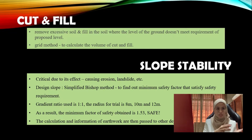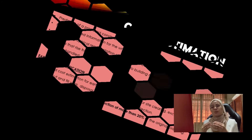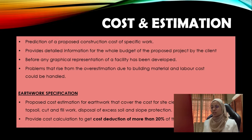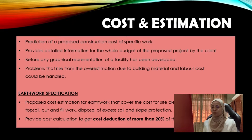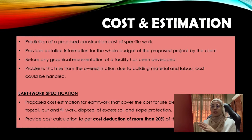The earthworks department passed all calculated information to other departments for their use. Next is cost and estimation. Cost and estimation is the prediction of the proposed construction cost of specific work. They provide detailed information for the whole budget of the proposed project by the client. It is done before any graphical representation of a facility has been developed, and it helps prevent problems arising from overestimation due to building material and labour costs. The cost and estimation is based on the earthwork specification.